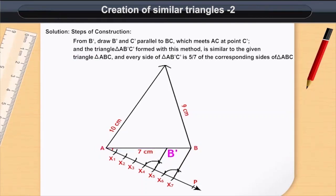From B', draw B'C' parallel to BC, which meets AC at point C'. The triangle AB'C' formed with this method is similar to the given triangle ABC, and every side of triangle AB'C' is 5/7 of the corresponding sides of triangle ABC.